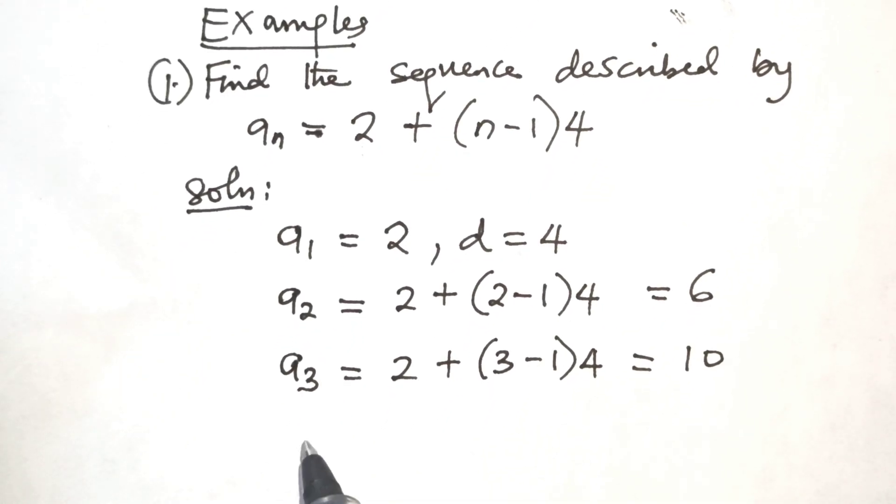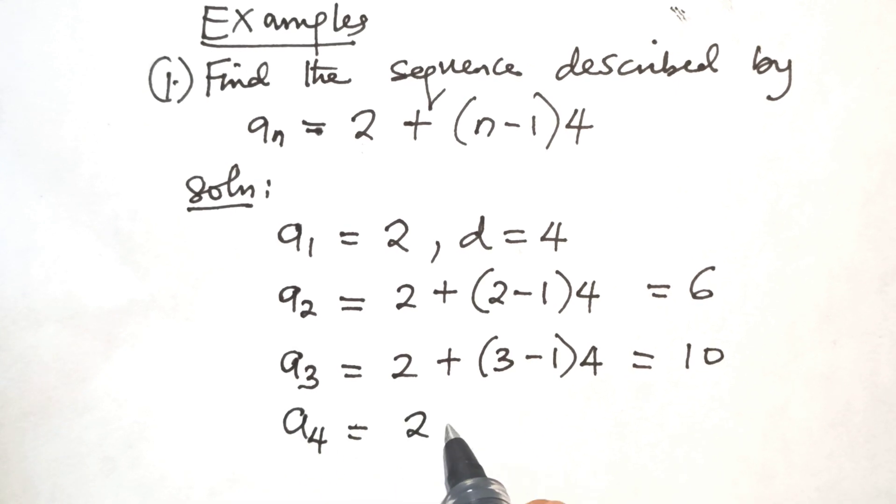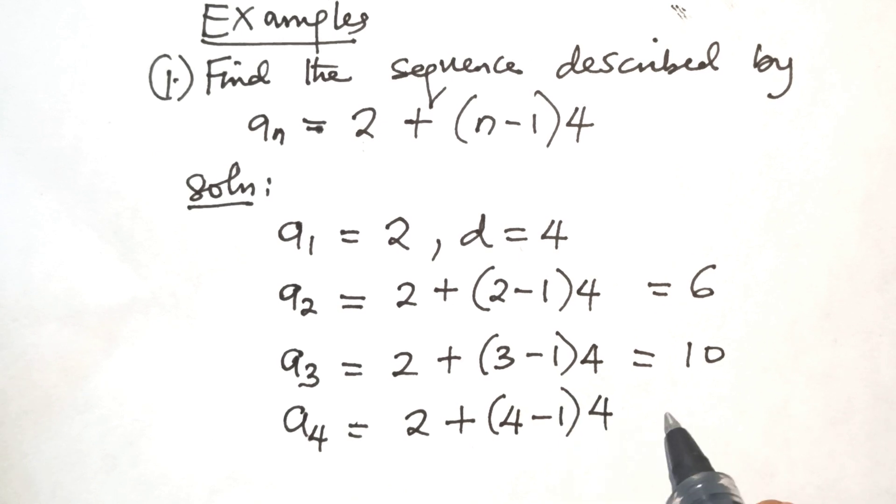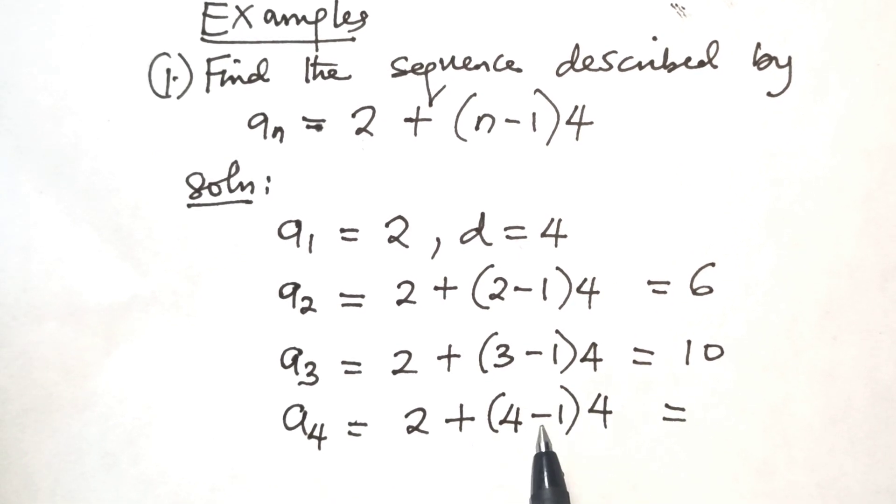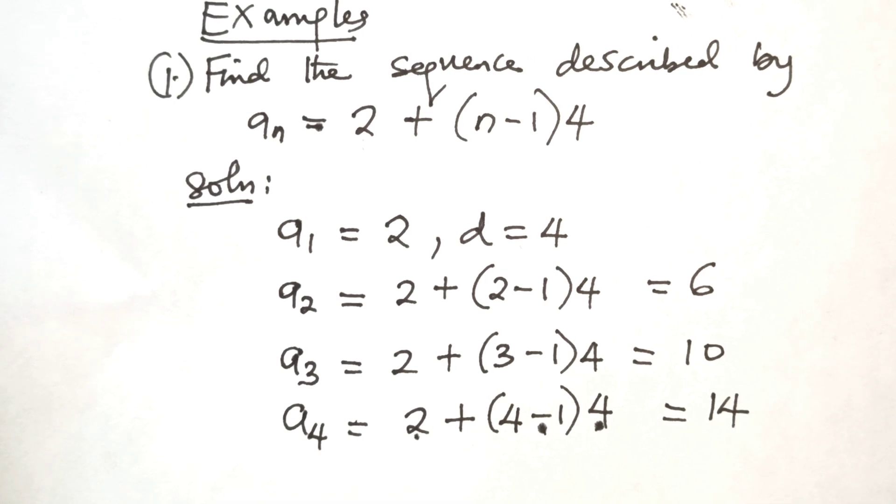Then, the fourth term, A4 is equal to 2 plus 4 minus 1 times 4. This will give us 4 minus 1 is 3. 3 times 4 is 12. 12 plus 2, 14. So we have 14 as the fourth term.